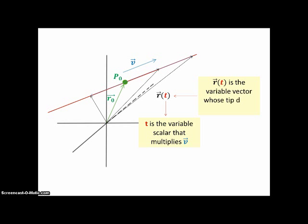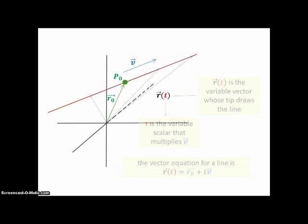And R of T is the variable vector whose tip draws the line. As T varies from negative infinity to positive infinity, you get every point on this line. So the vector equation for a line is R of T equals the fixed vector R0, plus some scalar multiple of vector V, where that scalar multiple runs the gamut over all the real numbers.